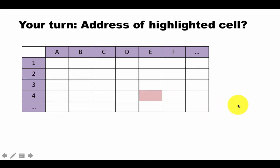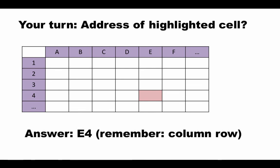One more for you to just test out your understanding of the concepts. Once again, what is the address of this highlighted cell? Pause the video, think up an answer for yourself, and then proceed to see the correct answer. The answer is E4, because this cell is in column E and it's in row 4. The cell address, once again just to repeat, is formed by the column name and the row number combined.